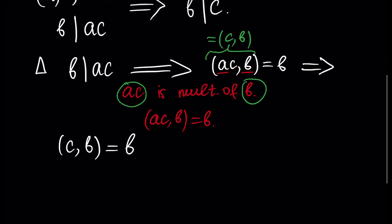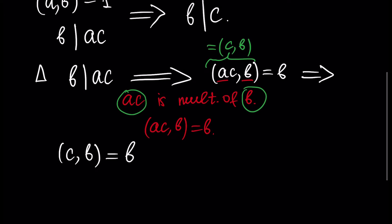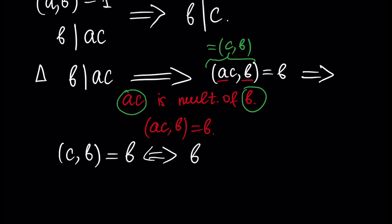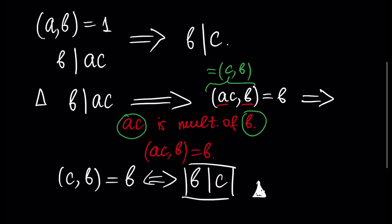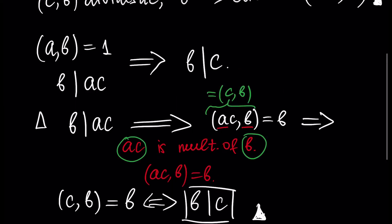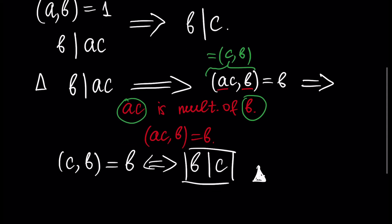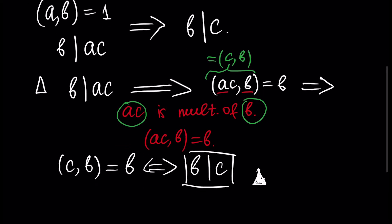Since B is the GCD of C and B, B divides C and B, or B divides C. And this is what we need. So we have B divides C, and we wanted to prove B divides C.